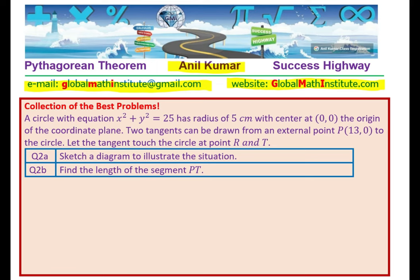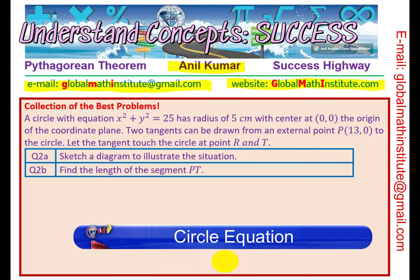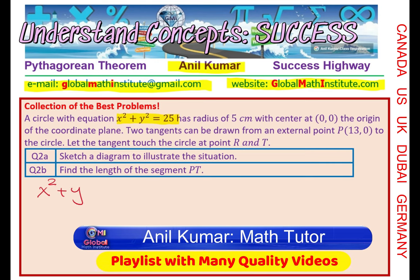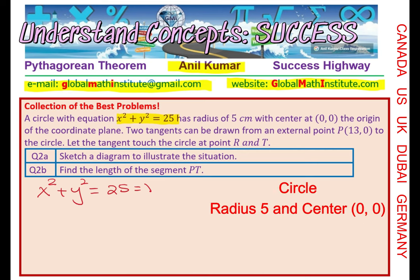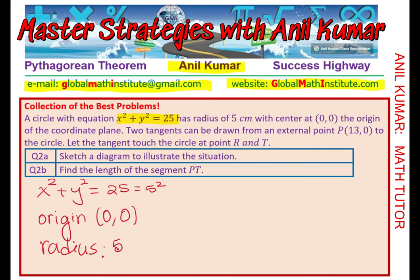Let us get back to the equation and see how this question is answered. First, let's understand what the circle x² + y² = 25 means. Here, 25 is 5², so the radius is 5. The origin is the center of the circle. So we have a circle centered at the origin with radius 5.